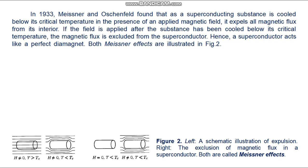In 1933, Meissner and Ochsenfeld found that if a superconducting substance is cooled below its critical temperature in the presence of an applied magnetic field, it expels all magnetic flux from its interior. If the field is applied after the substance has been cooled below its critical temperature, the magnetic flux is excluded from the superconductor. Hence a superconductor acts like a perfect diamagnet. Both Meissner effects are illustrated in figure 2.